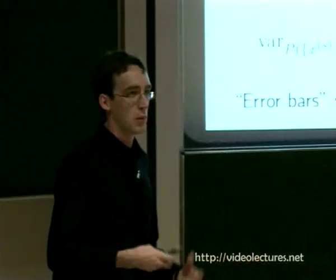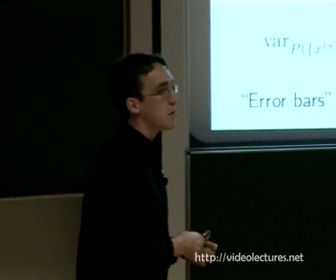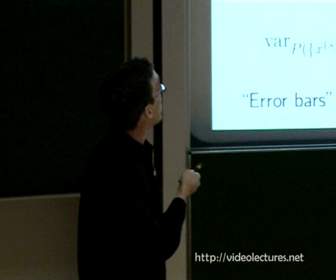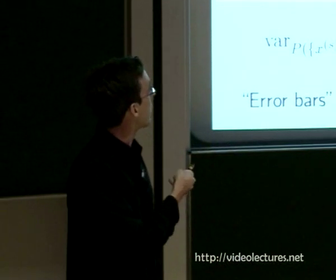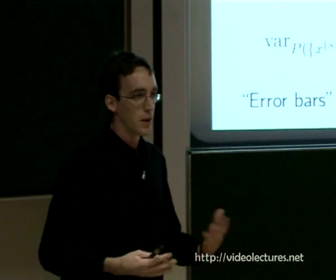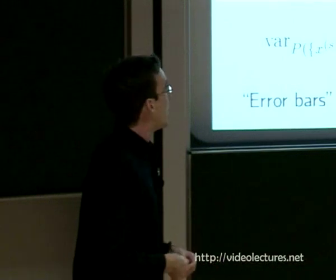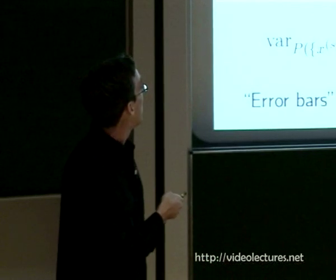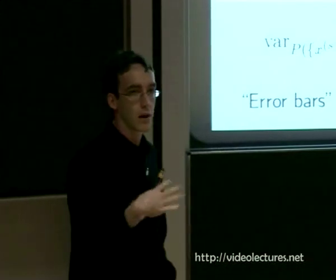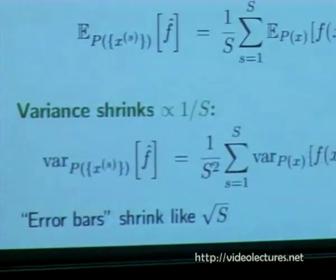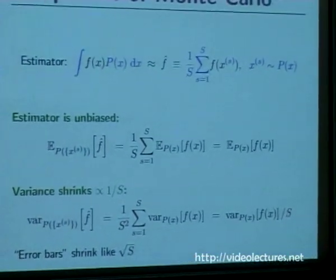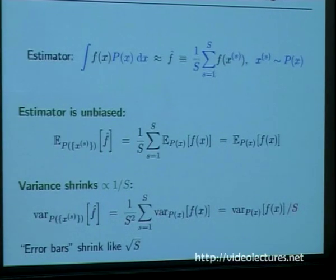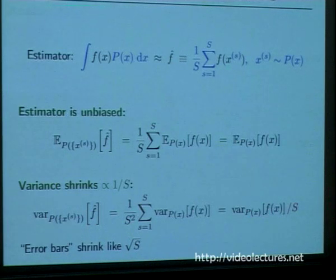We can be a bit more formal than just saying we grab a bunch of samples and look at the average. We can look at the expectation of this estimator, and it's trivial to show it's unbiased - on average, this estimator will get the right answer. You can also compute the variance of the estimator, and what's nice is that it shrinks with the number of samples. If you want a better answer, you just gather more samples - you don't have to implement a new algorithm, you just wait longer. The error bars shrink with the square root of the number of samples. So if you want your error bars to be 10 times shorter, you're going to have to wait 100 times longer.